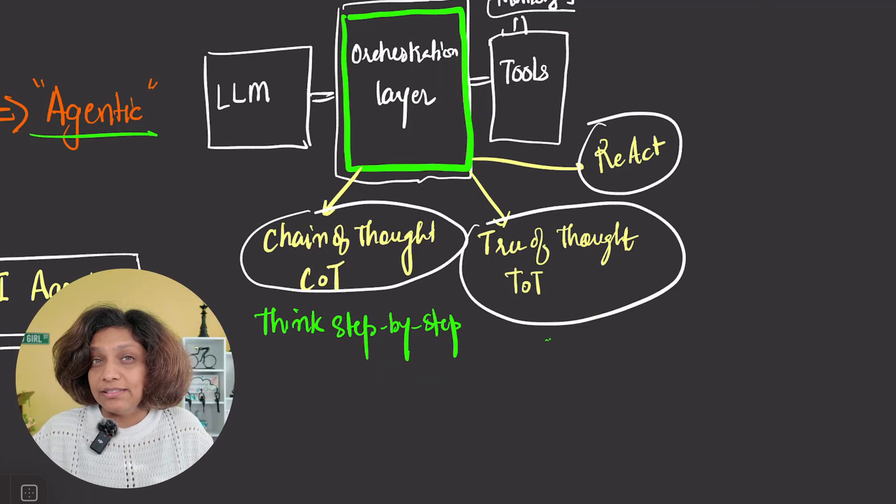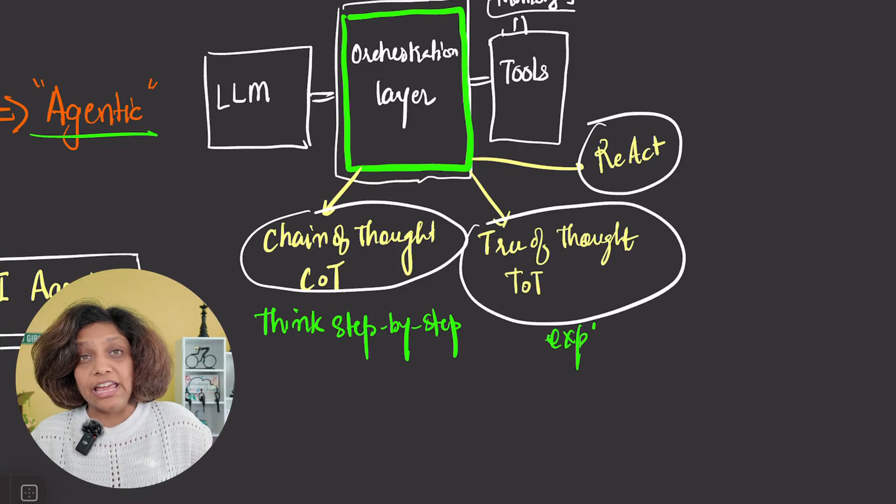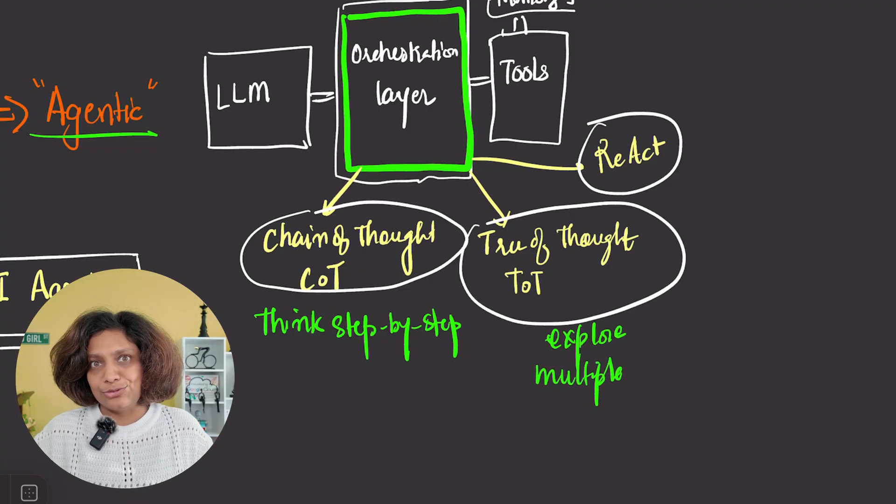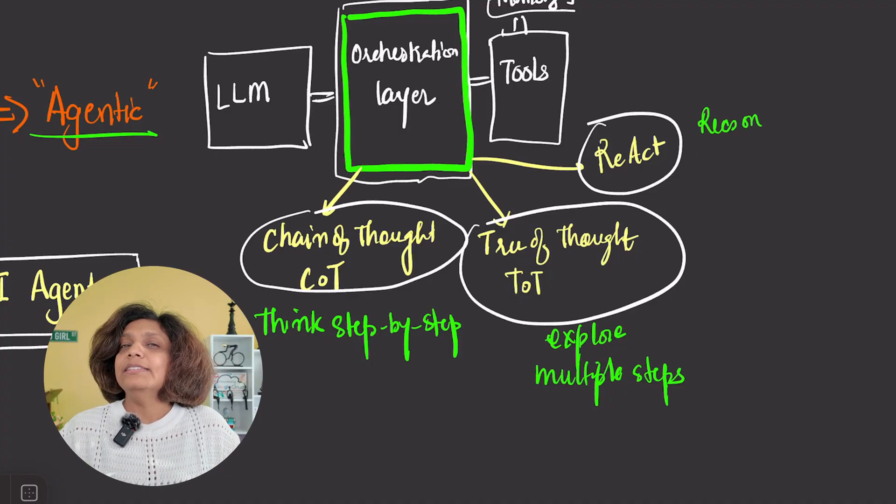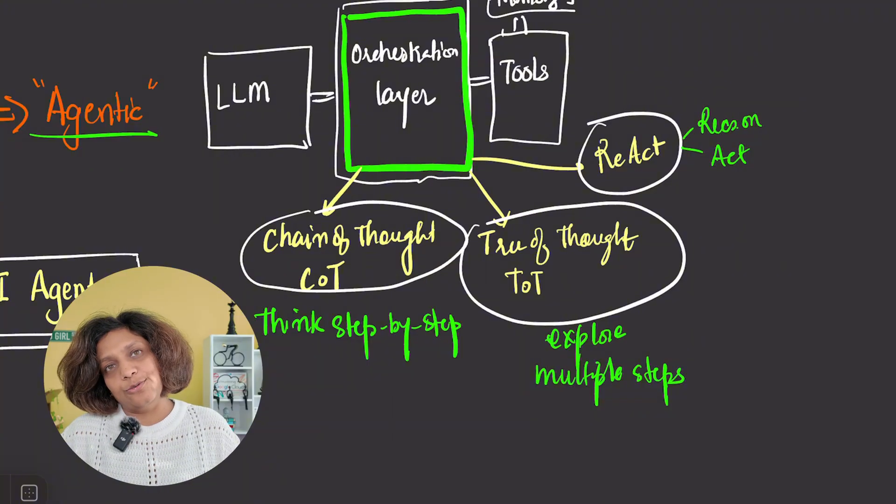Tree of thoughts, or TOT. This is a more advanced technique. It allows the model to explore multiple reasoning paths simultaneously, and then choose the most promising one. And then there's REACT, which stands for Reason and Act. This is the classic agent loop, and it's incredibly powerful. The agent reasons about what it needs to do, chooses an action, like calling a tool, observes a result from that tool, and then reasons again, based on the new information. This loop continues until the goal is achieved.